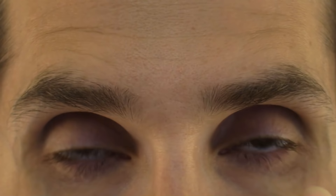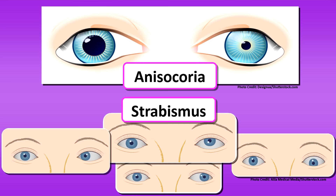Look at how the eyes sit in the eye socket. Are they equal? For instance, is there any strabismus — a cross-eye where one eye turns in, out, up, or down? These eyes are normal; there's no strabismus.